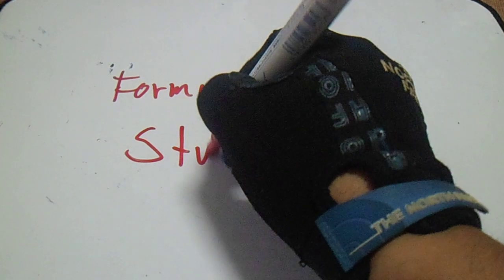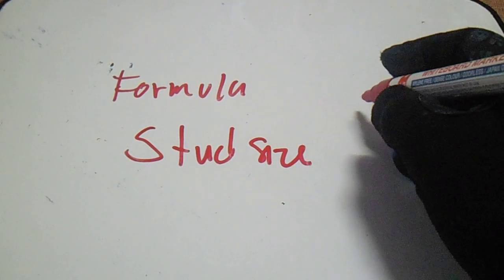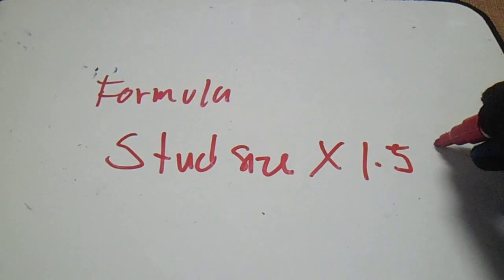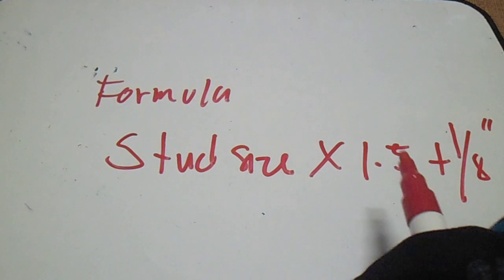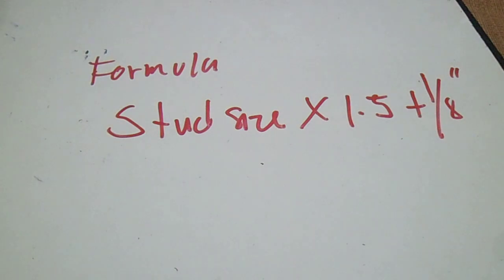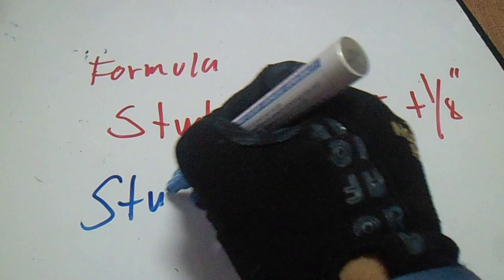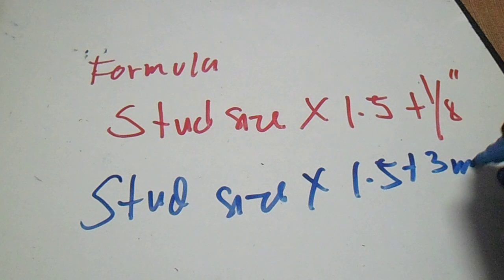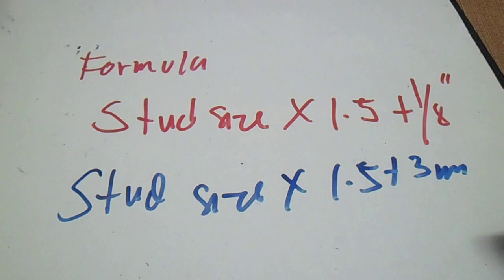The formula is: stud size times 1.5 plus 1/8 inch. For the millimeter stud size, multiply 1.5 plus 3mm. So this is the formula for how to determine the rent size.